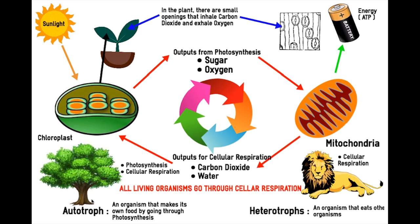To be clear, autotrophs are organisms that create their own food by going through photosynthesis, so they complete photosynthesis. But all living organisms go through cellular respiration, so autotrophs also complete cellular respiration. For humans and heterotrophs, we only go through cellular respiration. So if you ever wonder how we stay alive, thank autotrophs for creating oxygen in the process of photosynthesis.